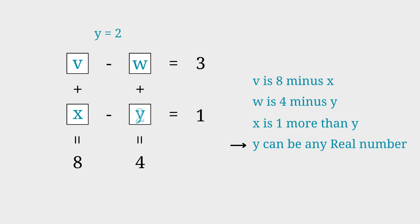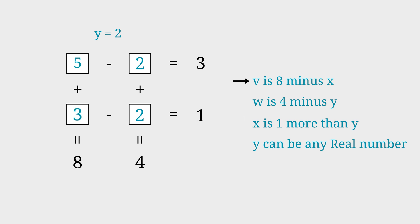Let's choose Y as 2. W is 4 minus Y, so 4 minus 2 is 2 — thus W is 2. X is 1 more than Y, so 1 plus 2 is 3 — thus X is 3. And finally V is 8 minus X, and 8 minus 3 is 5 — thus V is 5. I hope you learned something new. Thank you for watching.